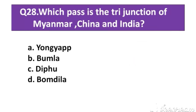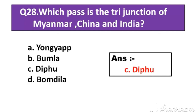Question number 28: Which pass is at the tri-junction of Myanmar, China and India? Option A: Pangsau Pass. Option B: Bumla. Option C: Diphu. Option D: Foam Dealer. The right answer is Option C: Diphu.